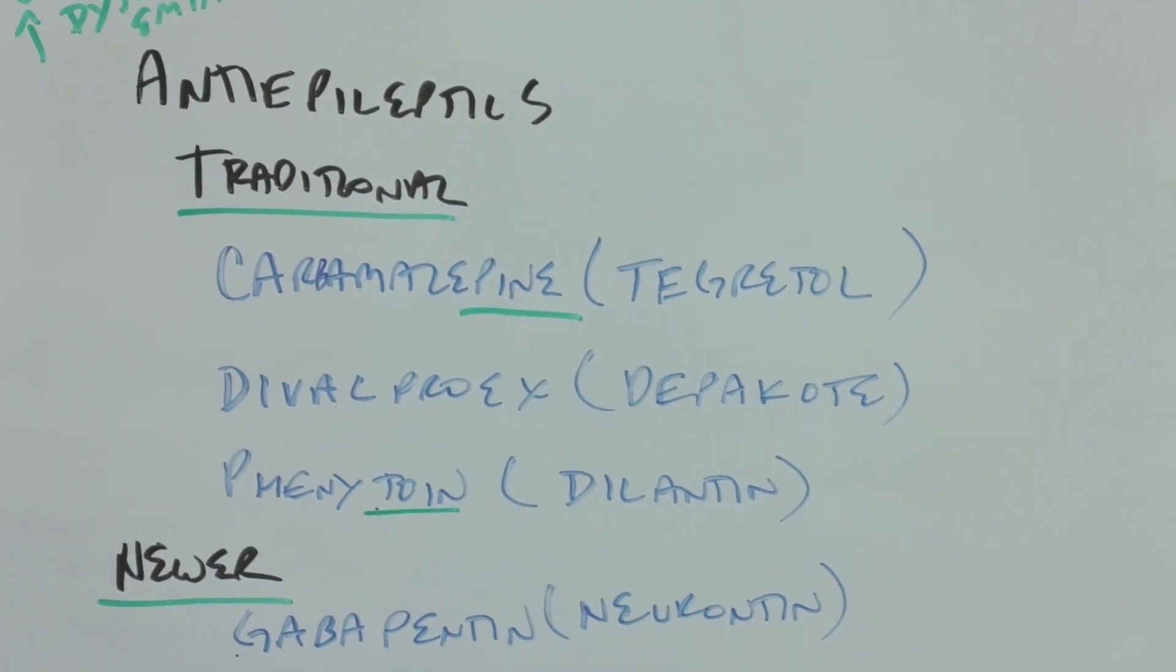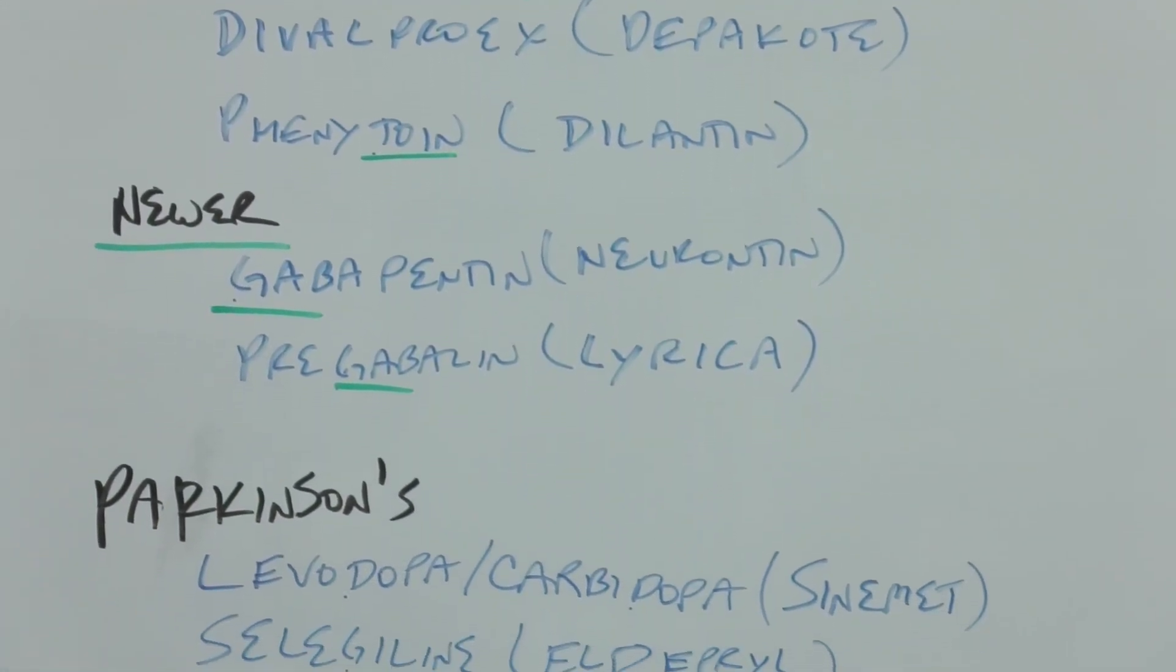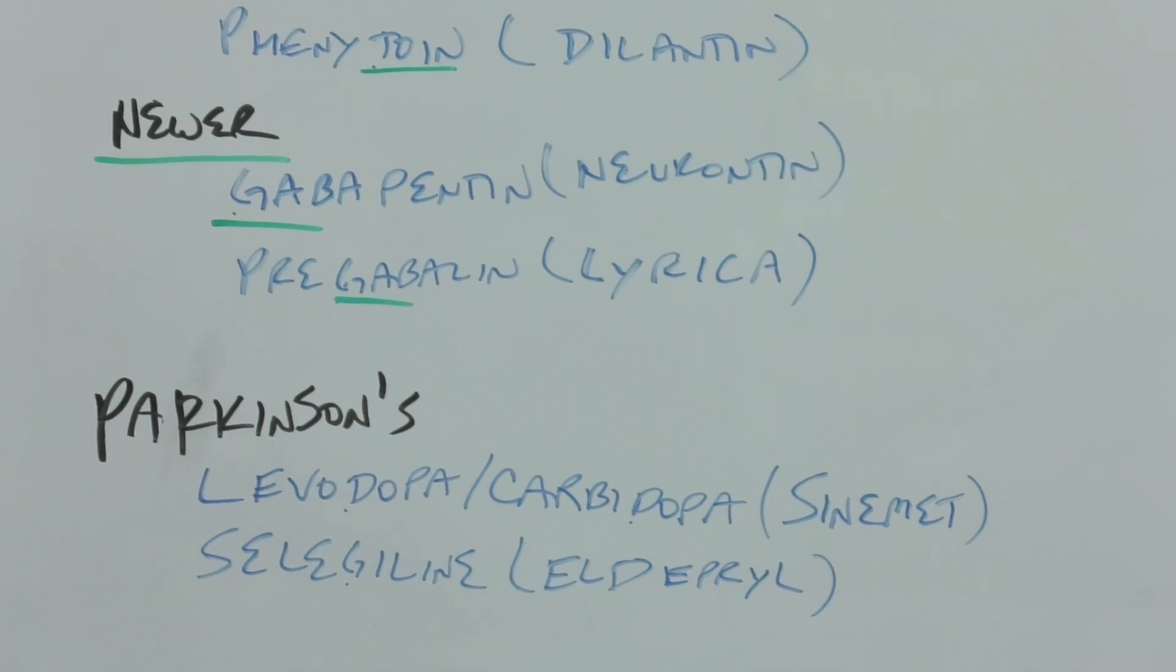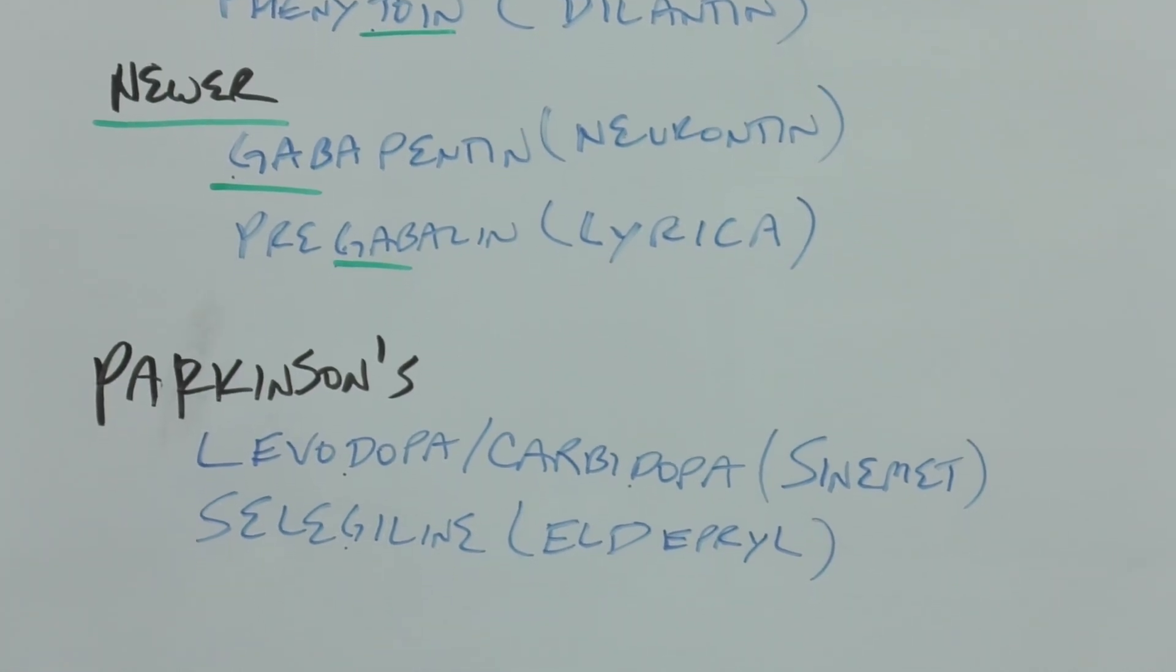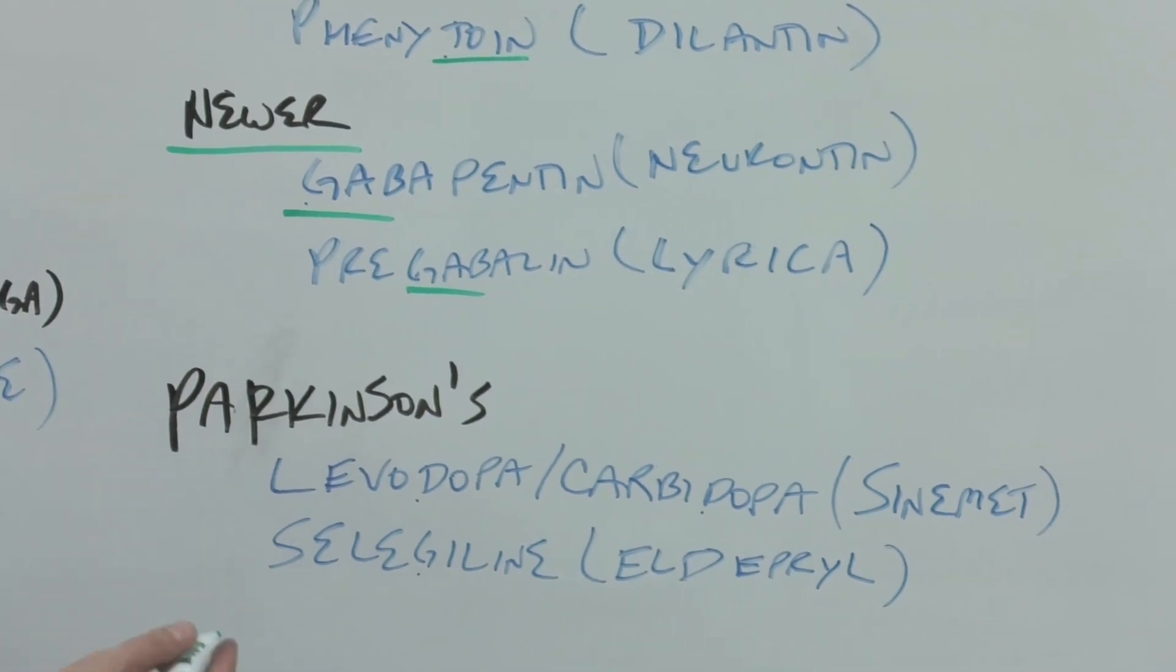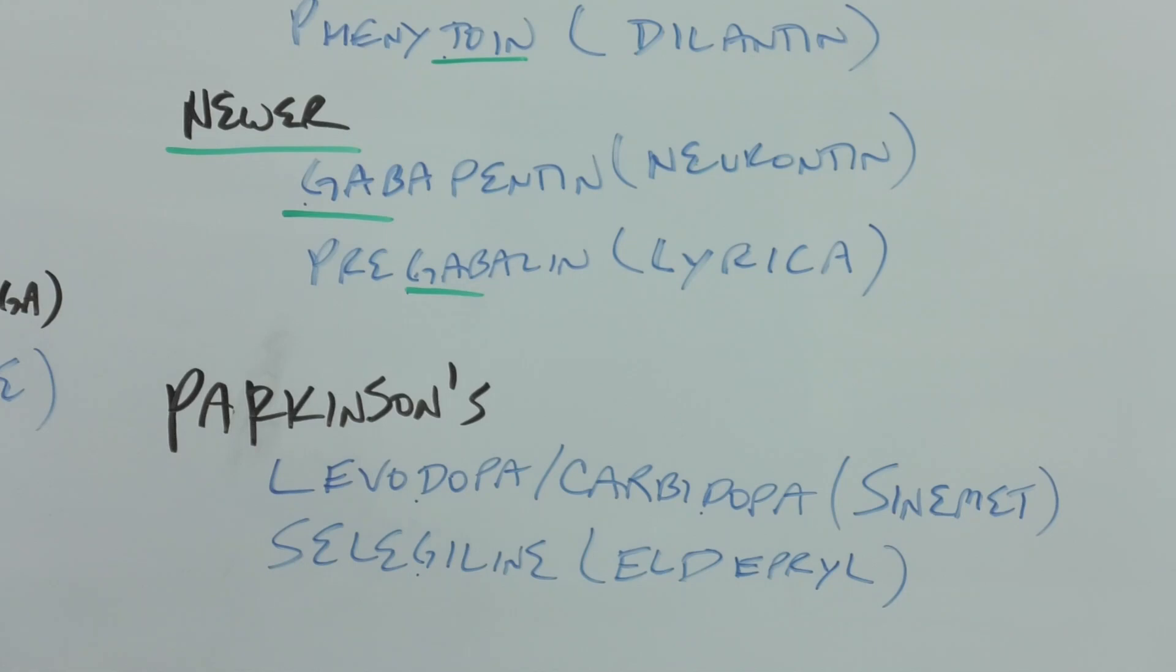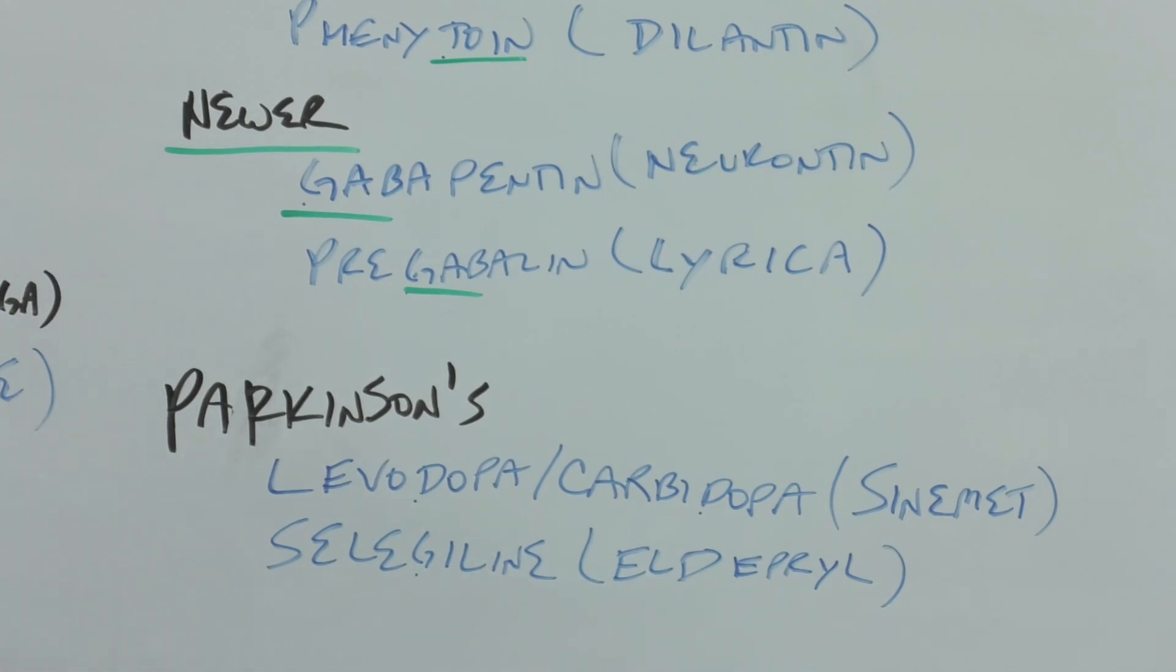The newer ones - I only happen to pick two drugs that happen to have gab in them. Gab is a stem for gamma-aminobutyric acid. Gabapentin is Neurontin - you can think of the neu, pronounced new, as the newer anti-epileptic. Then Lyrica is also a newer one. If something's lyric, it's musical, so we're taking this very disordered epilepsy and making it more ordered.